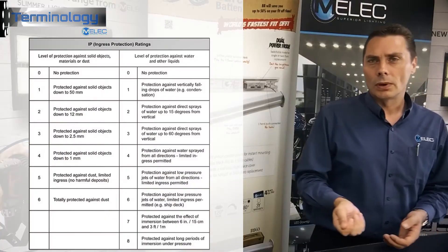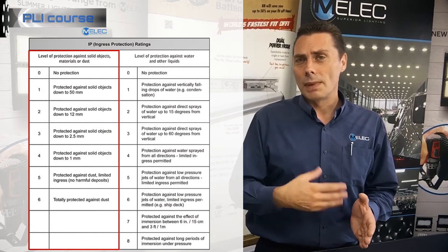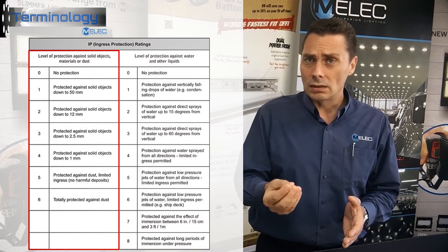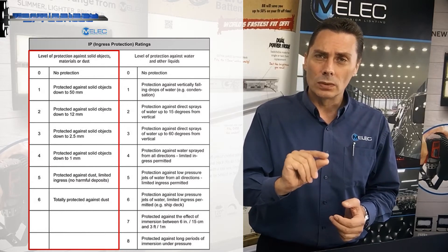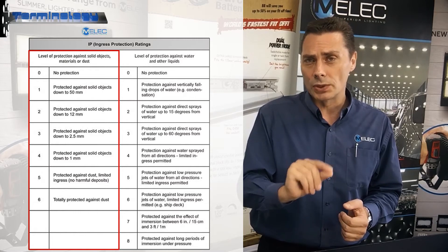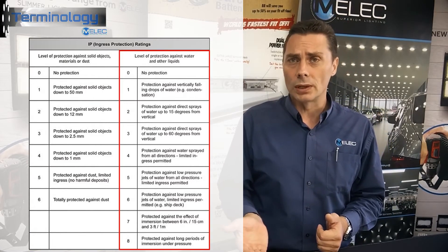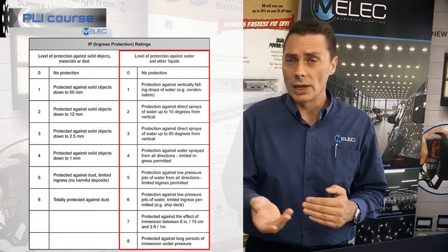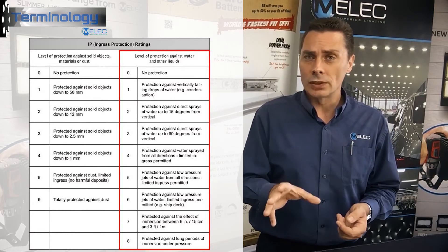IP ratings — IP stands for Ingress Protection, usually followed by two numbers. The first number refers to dust: the higher the number, the smaller the dust particle size the fitting can withstand, meaning better protection. The second number refers to moisture and the pressure it can handle — for example, whether it can handle a splash of water, a direct water stream, high-pressure water, or even full submersion underwater, as shown on the chart.